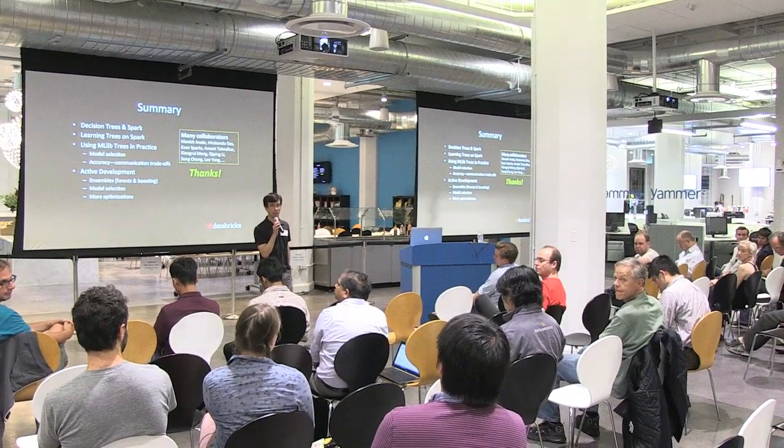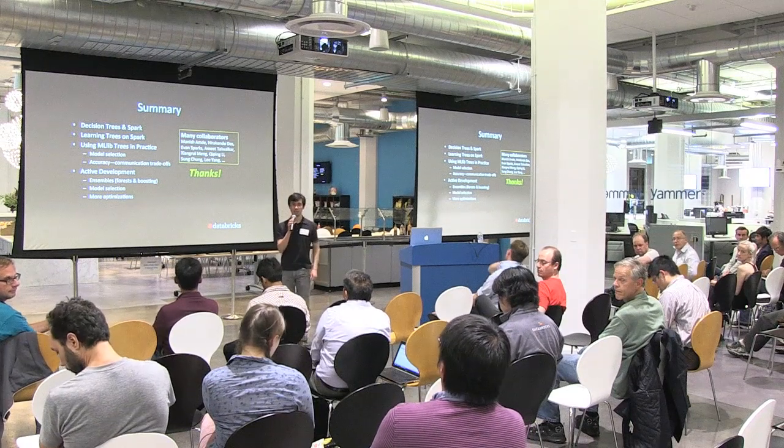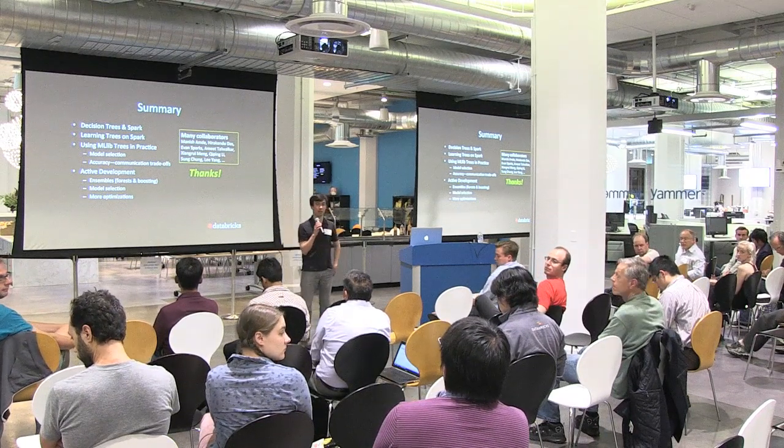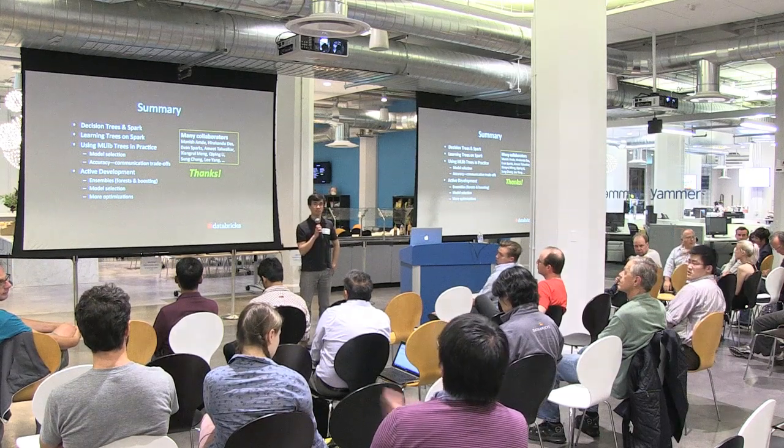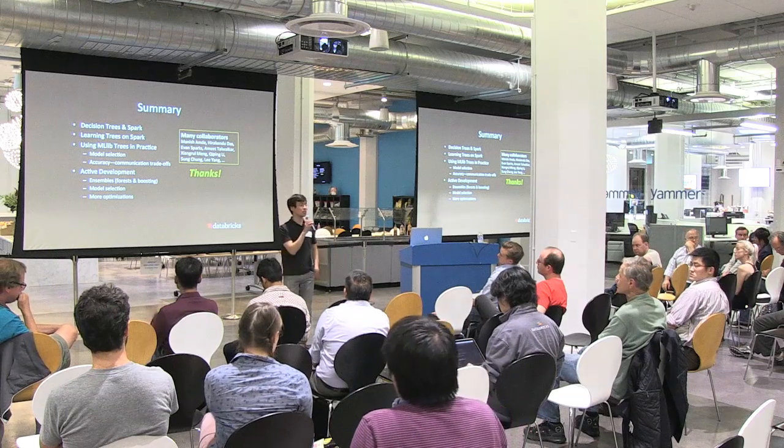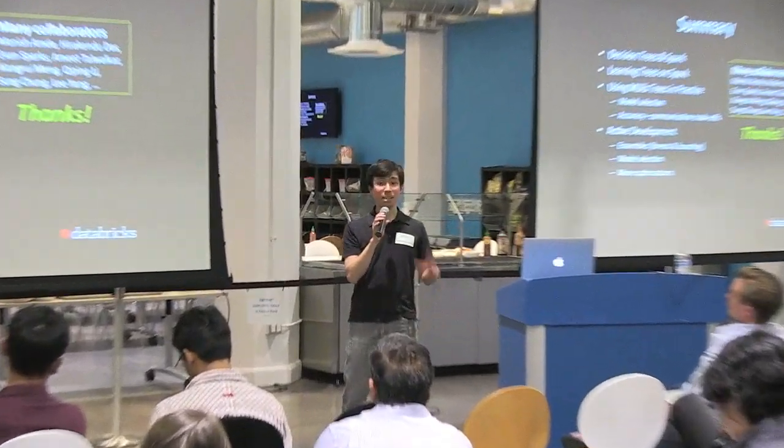Question about performance improvements: are there improvements for memory footprint? There are two areas: smaller sufficient statistics and a smaller dataset representation. On the statistics side, the current Spark master is more efficient than 1.1 — better at using an adaptive number of bins. For compressing the dataset itself, that's currently in Jira form but hopefully coming before long. There is also some underlying compression that happens with Spark which can reduce memory usage.